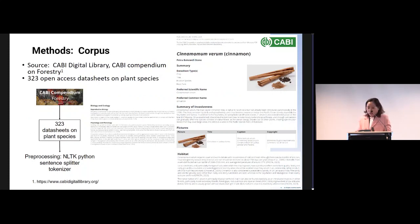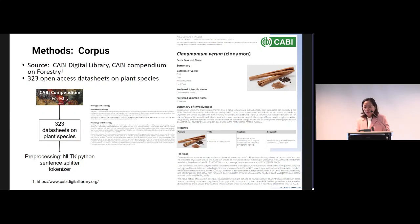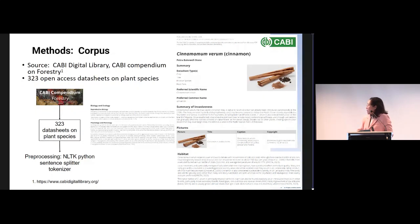We obtained our corpus from the Forestry Compendium of the CABI Digital Library. We selected 323 open-access data sheets on plant species. Each data sheet contains information about one species, including morphological description, importance, distribution, growth, reproduction, phenology, habitat, and ecology. We pre-processed the text data using Python's Natural Language Toolkit, specifically the sentence splitter and tokenizer. On the right is an example of a data sheet in CABI.